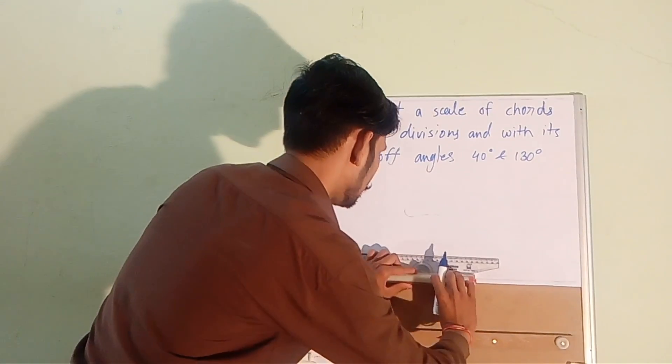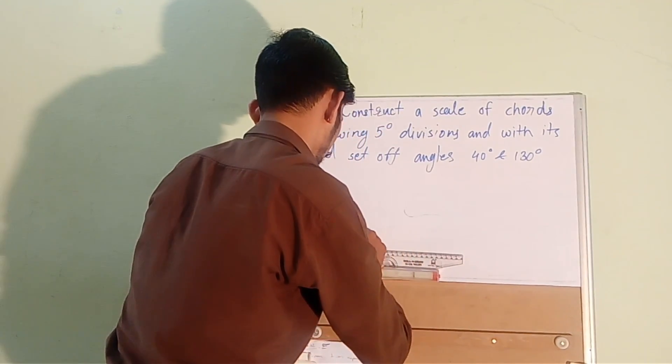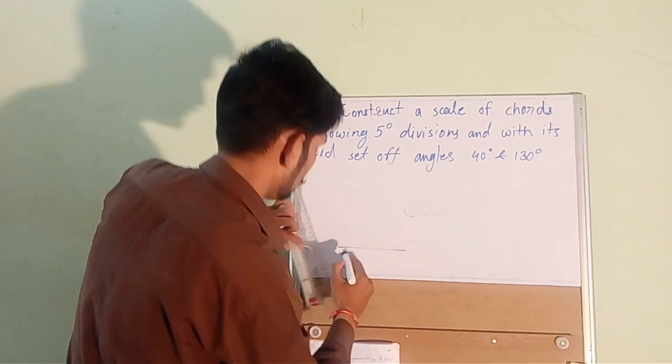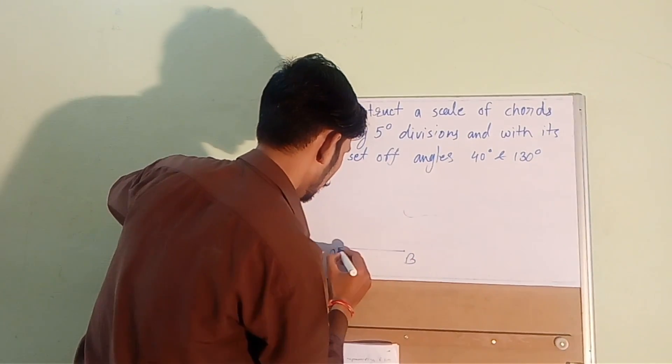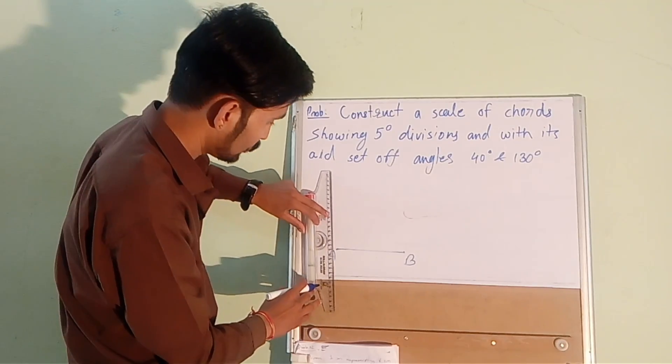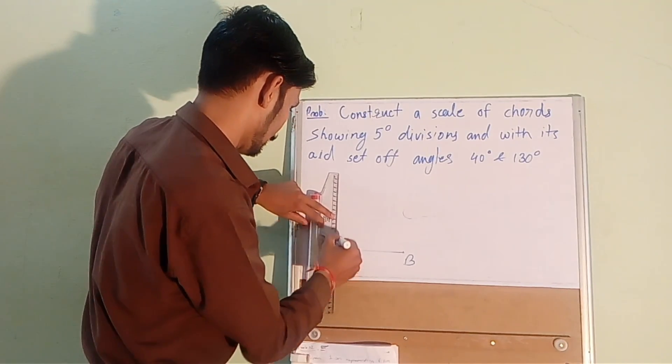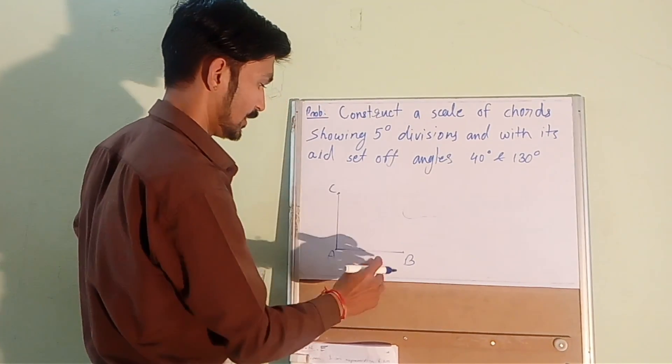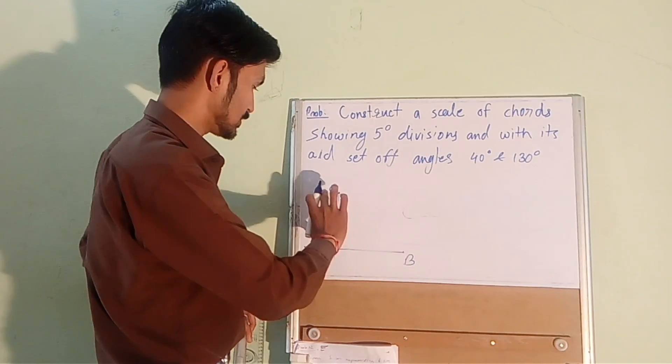Firstly draw a line AB and on point A draw a perpendicular line AC and here AB is equals to AC.